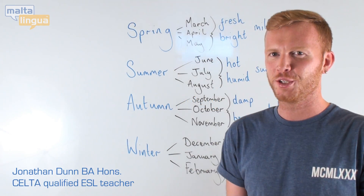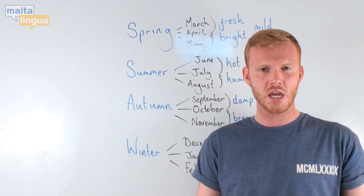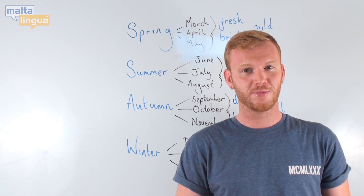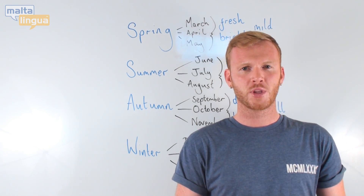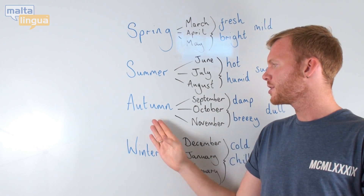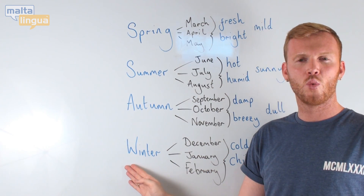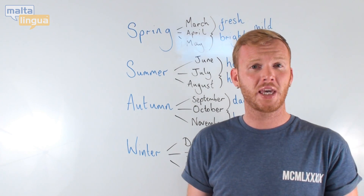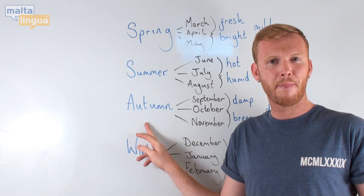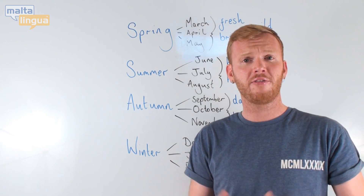Today we are going to look at some different vocabulary that we can use to describe the different seasons in the year. We have four seasons: spring, summer, autumn, and winter. If you are speaking to a person from the United States of America, they may refer to the autumn as 'fall', but it's better to learn 'autumn'.